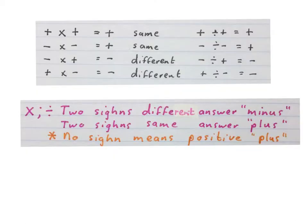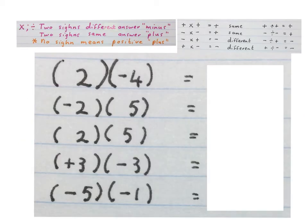Remember: if you multiply or divide and the two signs are different, the answer will be a minus. If the two signs are the same the answer will be a plus. If there is no sign it means there's a positive in front of that number. Also remember if you ever see two brackets right against each other like this, it always means there is a multiply sign between them.